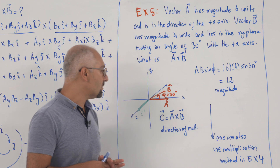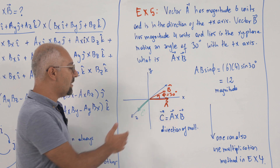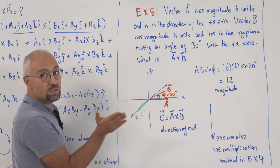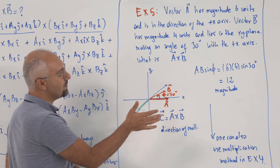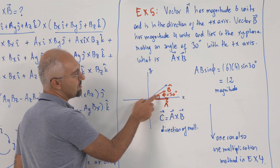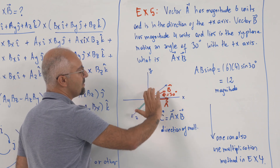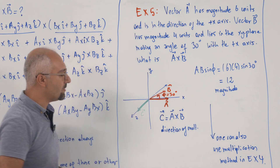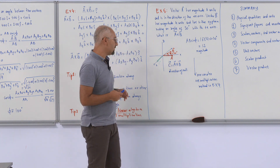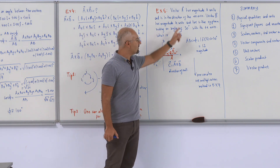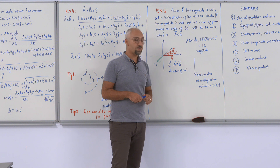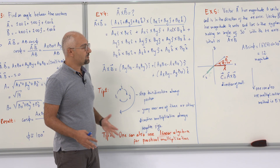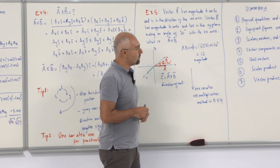The direction of A × B is found using the right-hand rule: point the fingers of the right hand along vector A, curl them toward vector B, and the thumb points in the direction of the resultant vector C — which is in the z-direction for vectors in the xy-plane. You can also use the component multiplication method or a linear algebra matrix determinant approach for the cross product.